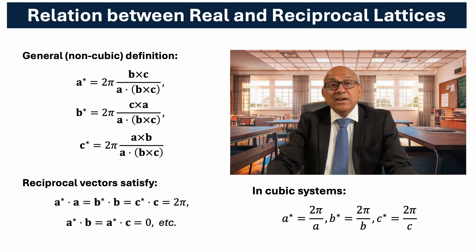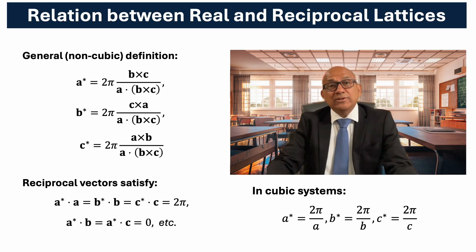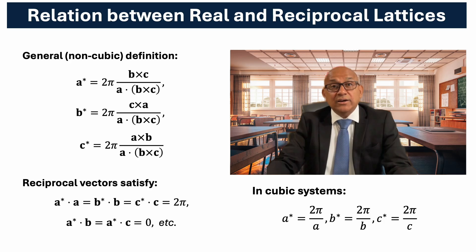This ensures that each reciprocal vector is perpendicular to the other two real space vectors. For instance, A* is perpendicular to both B and C. These vectors satisfy the orthogonality condition: A*·A = B*·B = C*·C = 2π, and the mixed dot products like A*·B or A*·C are zero. In a cubic system where all lattice vectors are orthogonal and equal in length, these relations simplify to simple inverses.